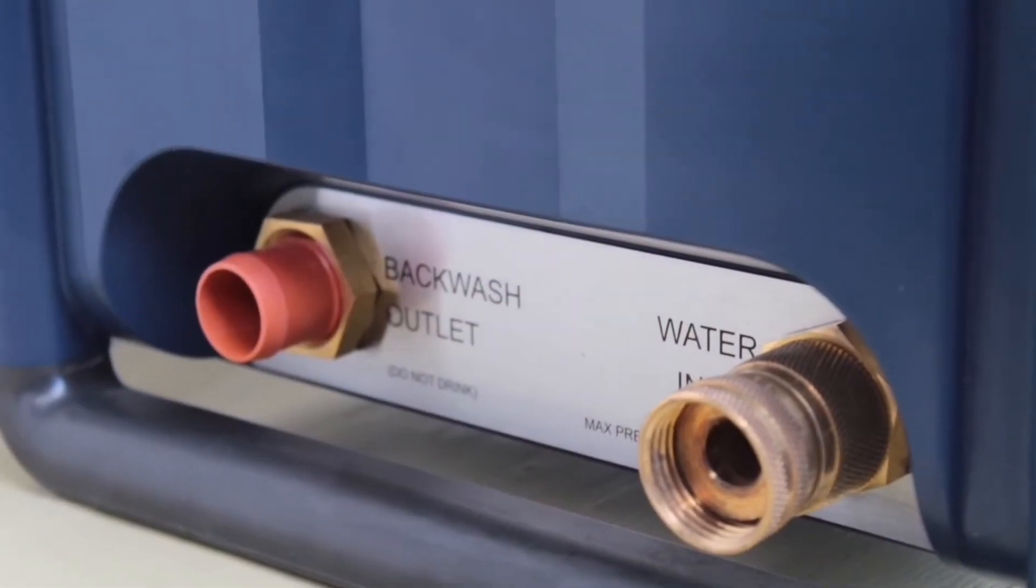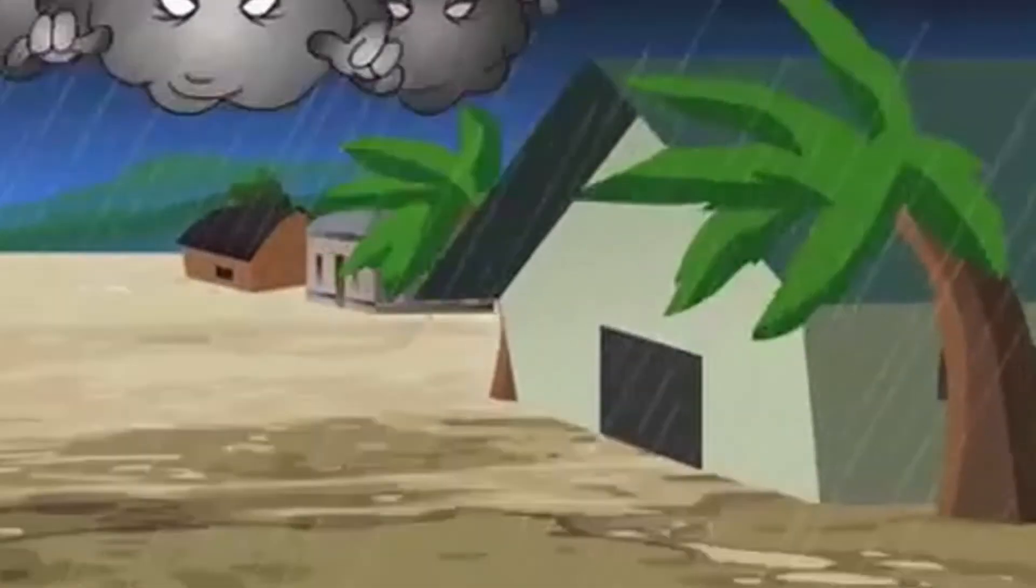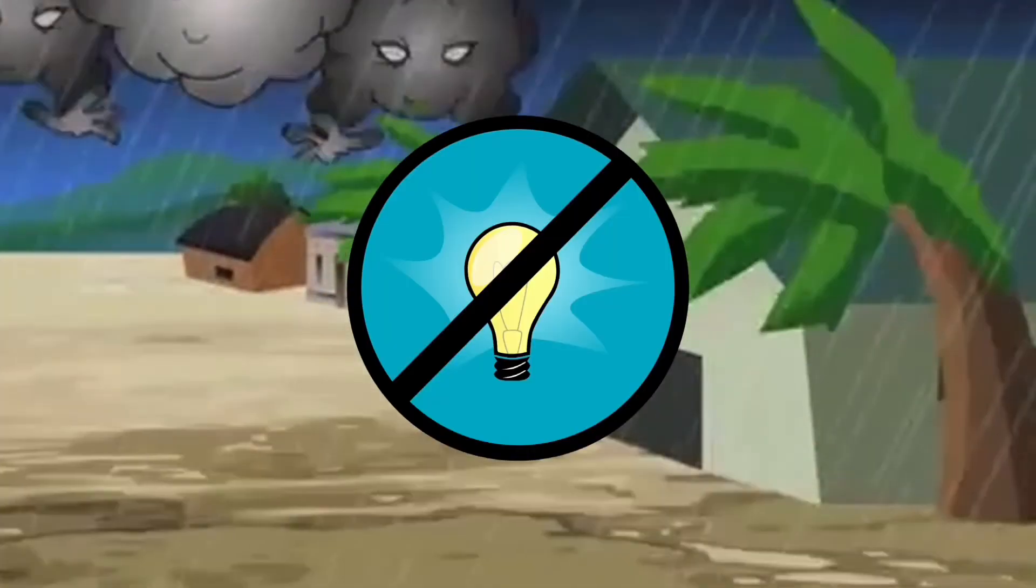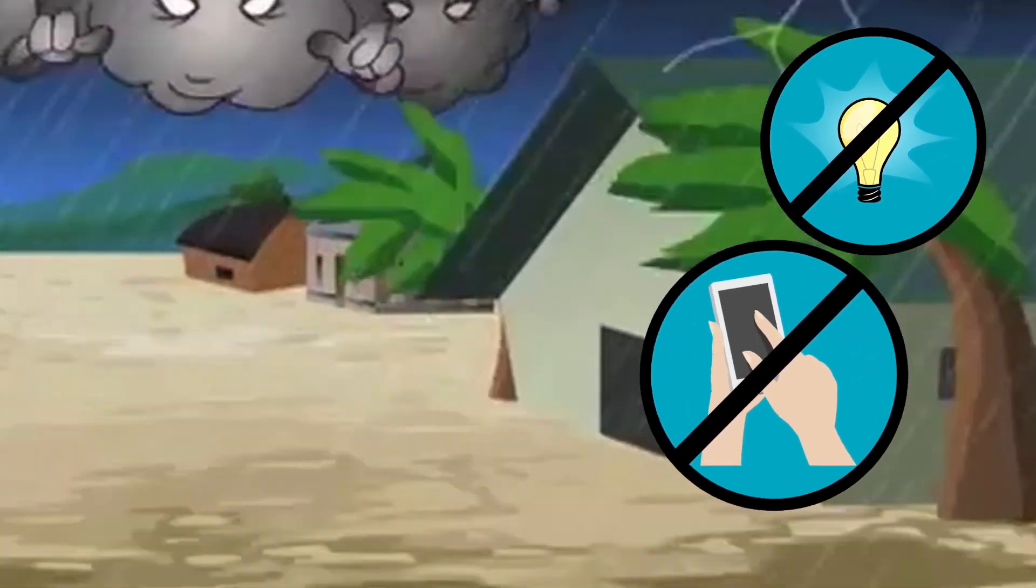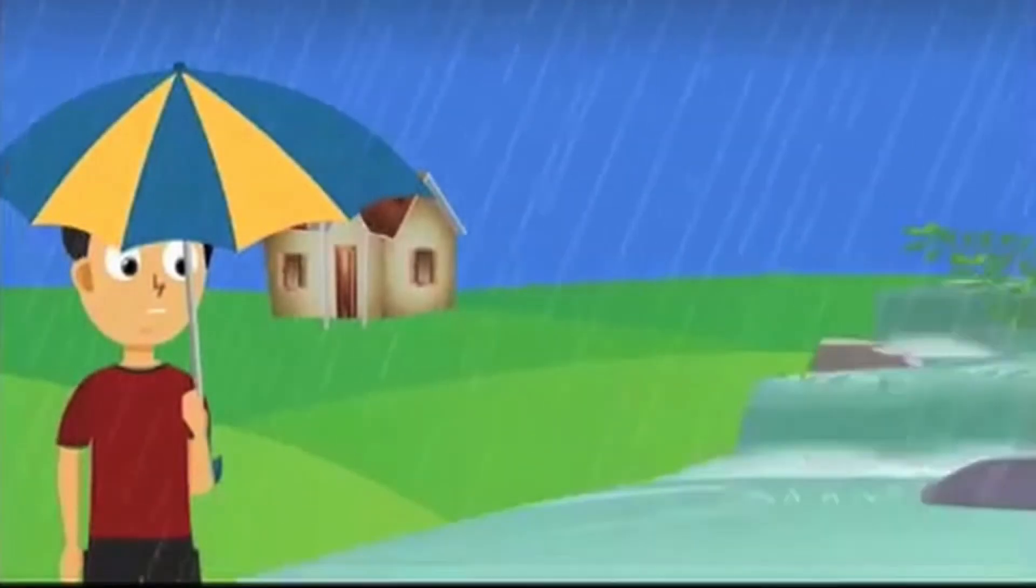In the aftermath of earthquakes and flash floods, all signals are down and there will be no source of electricity. Cellphones are inaccessible and any means of communication is lost.